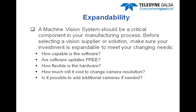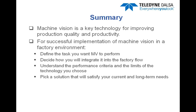In summary, machine vision is a key technology for improving production quality and productivity. For successful implementation, you need to go through the steps outlined here. Define the task you want it to perform. Decide how it's going to integrate into your factory — you have PLCs involved, you have operators involved. Understand the performance criteria and the limits of the technology you choose, making sure they match the performance you require out of your machine vision system. And lastly, pick a solution that will not only satisfy your current needs but also your future needs. These projects typically grow once folks implement machine vision as a quality control system — they find more and more places to use it, and you'd like a system that can grow with your needs.